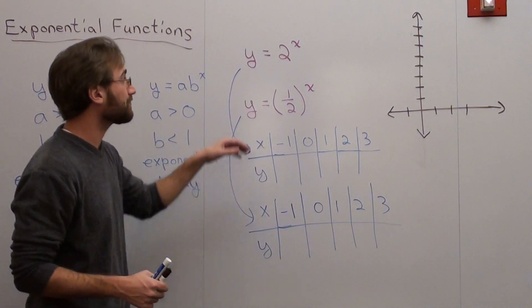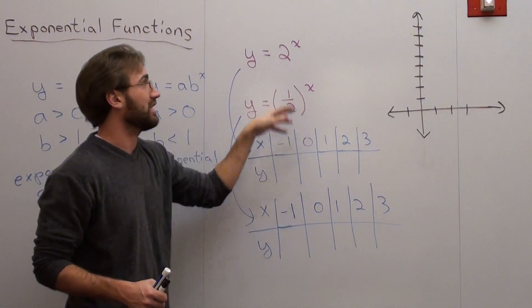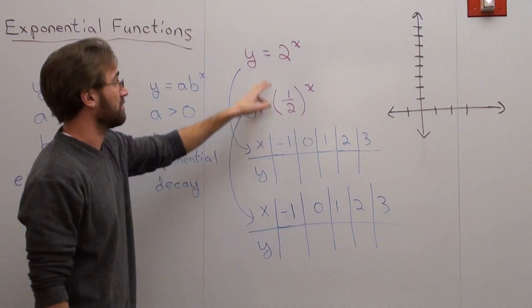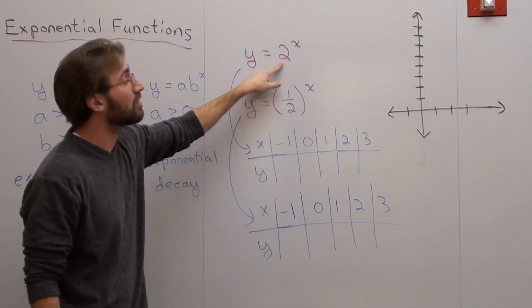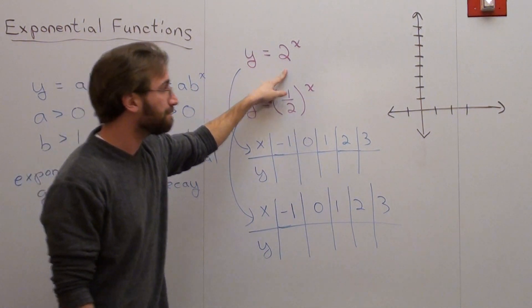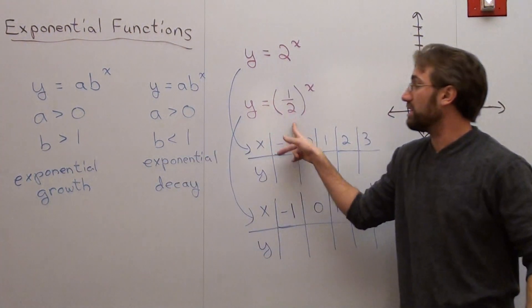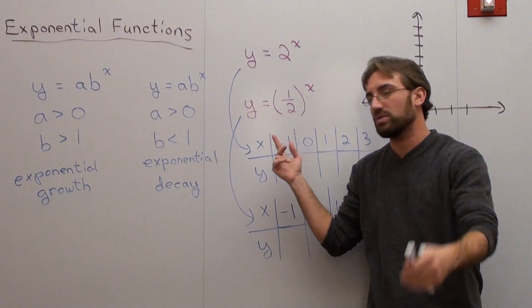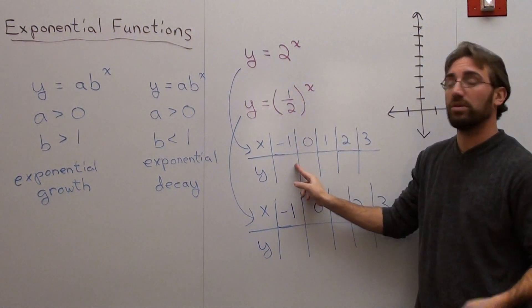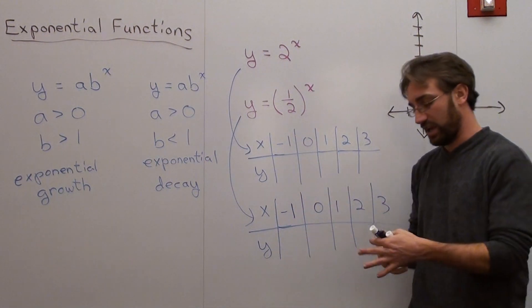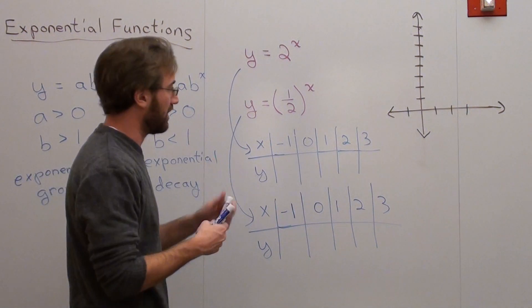And I did two different examples where I do y equals 2 to the x and y equals 1 half to the x. I don't have an A term for either of these, but I do have a B term. The B term is 2 here, and the B term is 1 half here. Since the B term is bigger than 1, it's exponential growth. And since the B term is smaller than 1, in this case 0.5 is smaller than 1, it's exponential decay. And I went ahead and I wrote my tables. The first table for the first graph, the second table for the second graph, just so you can see.